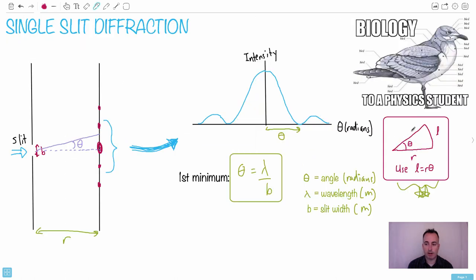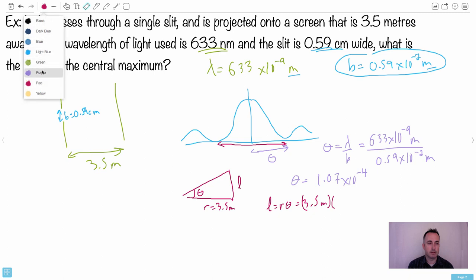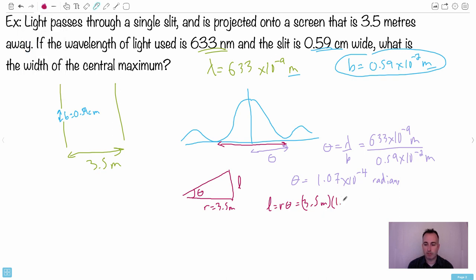We have L equals R theta. So we'll have R equals 3.5 meters. I want this L value which I don't know. And this is the angle theta. So now L equals R theta, which is going to be equal to 3.5 meters times this angle. Oh wait, watch out. This angle is not in meters. I hope you were screaming at me for that one. The angle is not in meters, it's in radians. So we have 3.5 meters times 1.07 times 10 to the minus 4. This is the length. So I get 3.75 times 10 to the minus 4 meters.